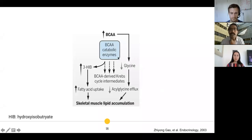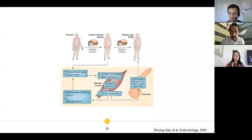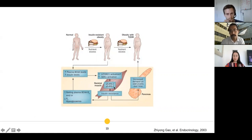In the muscle, branched chain amino acid metabolism leads to the production of the metabolite 3-hydroxyisobutyrate, which promotes fatty acid uptake in the muscles, therefore leading to lipid accumulation in the muscle and insulin resistance in skeletal muscle. Additionally, overactivation of the mTORC1 pathway prevents coupling of the insulin receptor in skeletal muscle, which also leads to insulin resistance. This increases demand on the beta cells, ultimately contributing to type 2 diabetes.